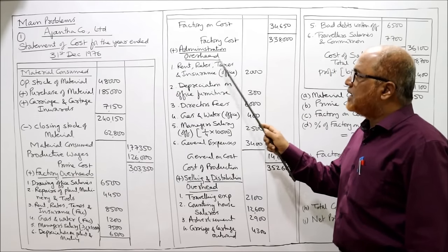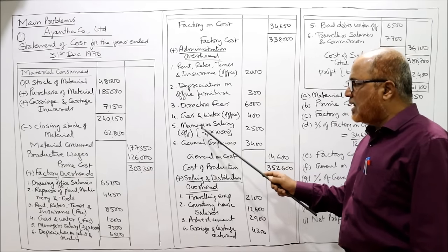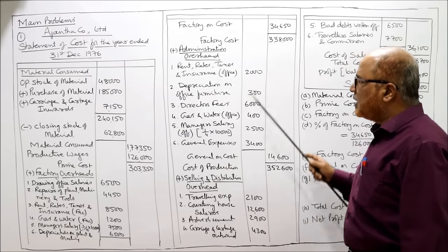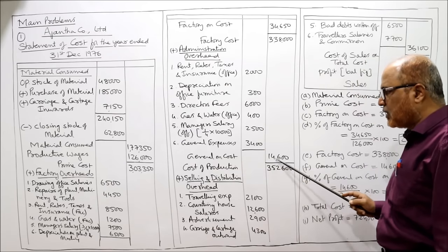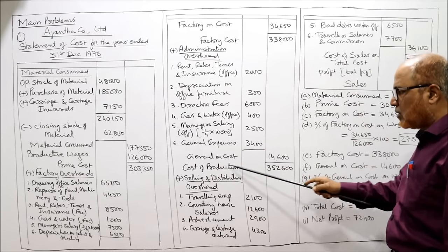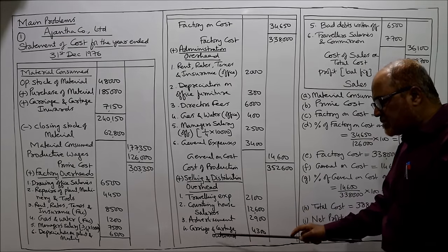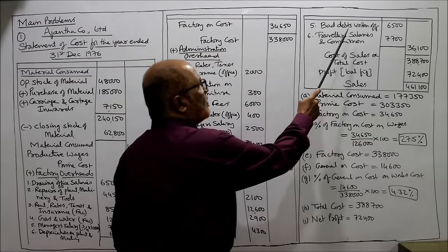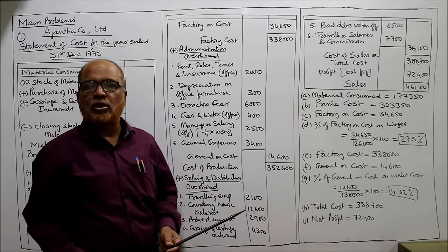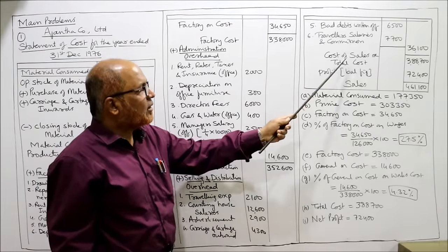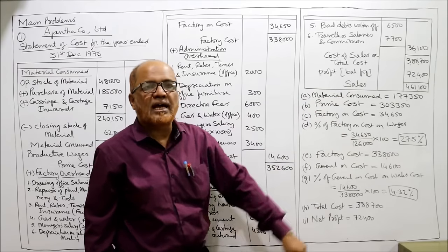Administration overhead items: rent/rates/taxes/insurance (office), depreciation on office furniture, directors' fee, gas and water (office), manager's salary office 1/4 of 10,000 = 2,500, general expenses. Total administration overhead — called general on cost — is 14,600. Factory cost plus general on cost gives cost of production. To cost of production we add selling and distribution overhead: traveling expenses, counting house salaries, advertisement, carriage and cartage outward, bad debts written off, travellers' salary and commission. Total selling and distribution overhead is 36,100.